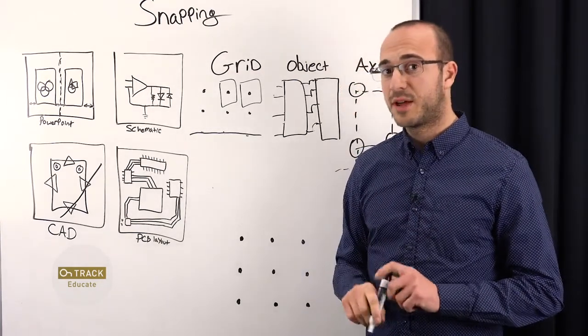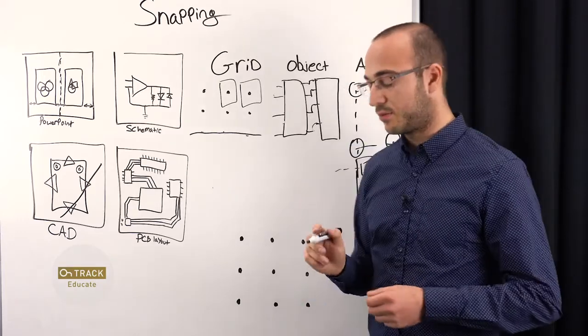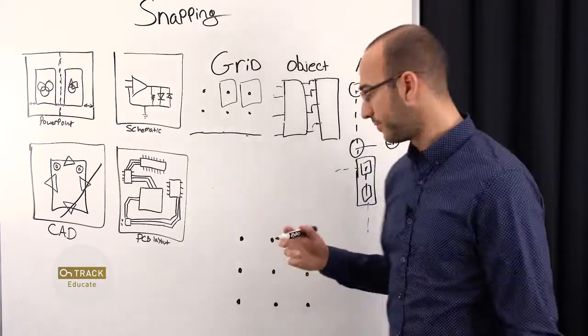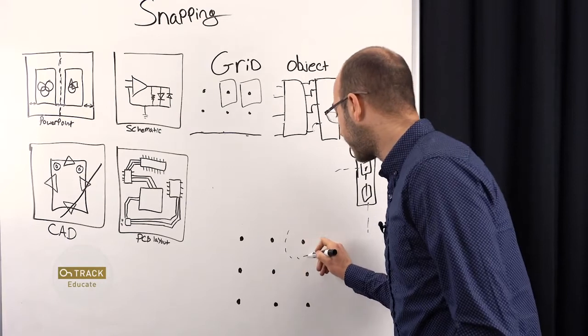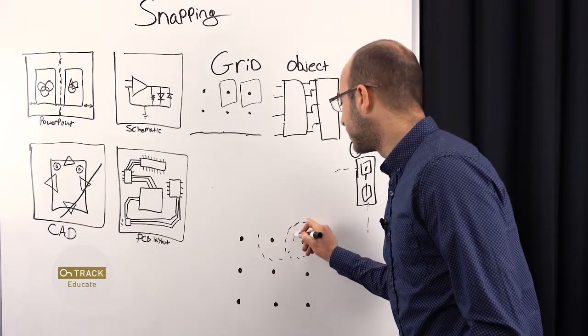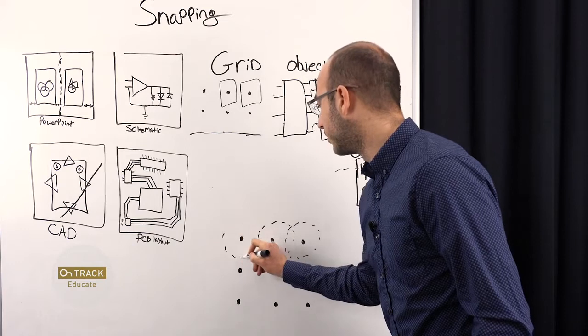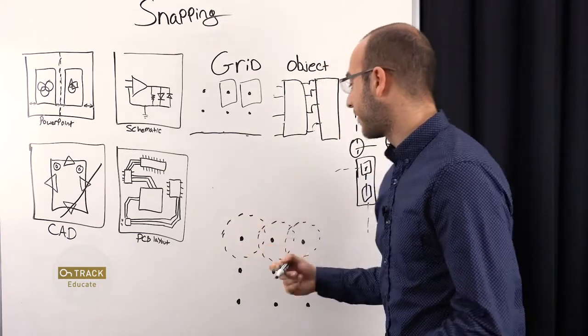The last thing I want to talk about is the concept of a snapping area. A snapping area can be thought of as the event horizon of a black hole, or at least that's how I think of it.